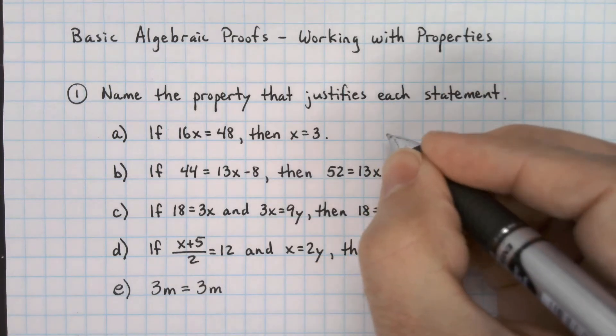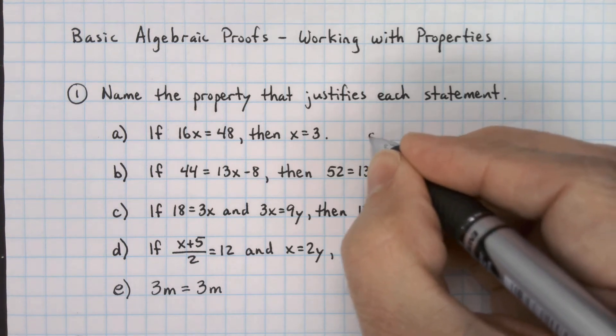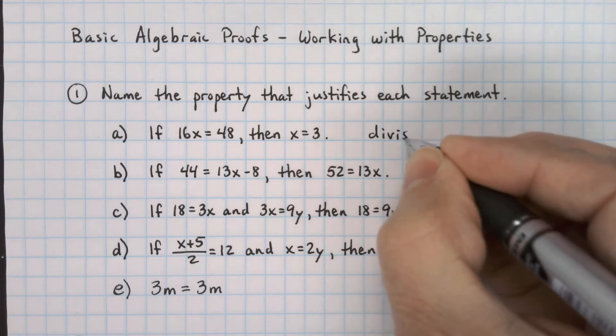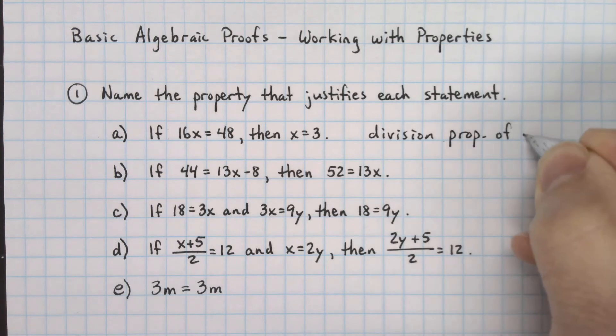If you divide by the same thing on each side, and the two things were equal to begin with, and they remain equal, then that's using the division property of equality.